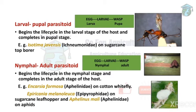Next is nymphal-adult parasitoid — the wasp lays eggs when the host is in the nymphal stage and completes its life cycle when the host is in the adult stage. Between nymphal and adult stages, the egg, larva, and adult wasp develop, feeding on the host and finally killing it. It begins its life cycle in the nymphal stage and completes it in the adult stage of the host.